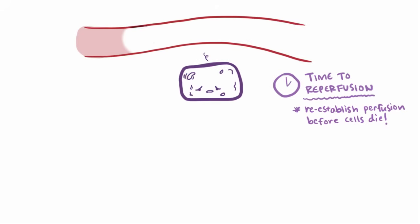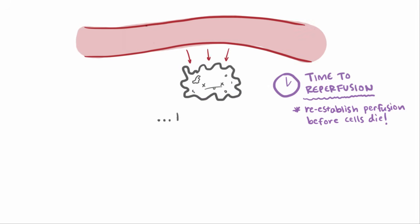Now back to reperfusion. If perfusion to the area is re-established quickly enough, then it's possible that the ischemia is reversible because the cells were dying but they're not dead. If too much time has passed and the cells have actually died, then the ischemia is irreversible since you can't bring back dead cells.